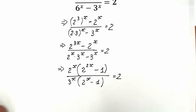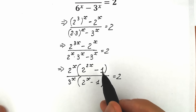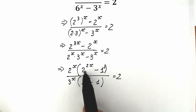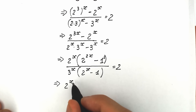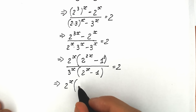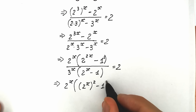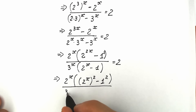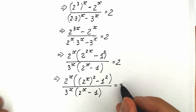What do we do next? We can write 2^(2x) minus 1 as (2^x)² minus 1². This is the tricky moment — it changed nothing, but now we recognize the difference of squares identity. So the numerator becomes 2^x times [(2^x)² minus 1²], divided by 3^x times (2^x minus 1), equal to 2.